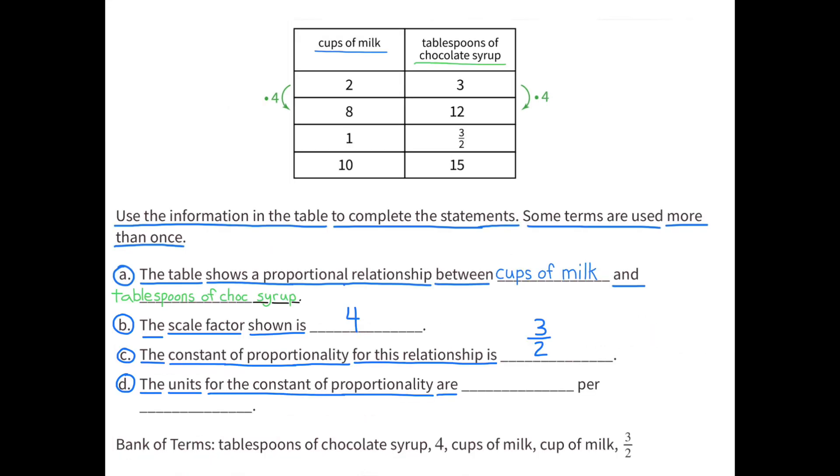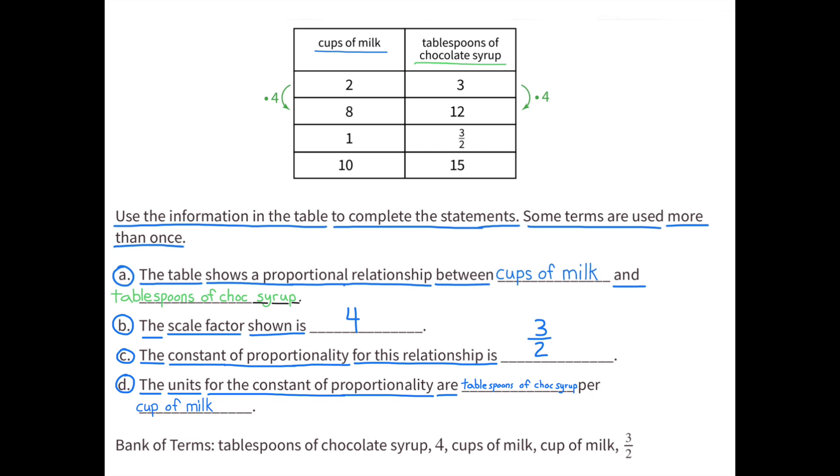The units for constant of proportionality are blank, per blank. The units of the constant of proportionality are tablespoons of chocolate syrup per cup of milk.